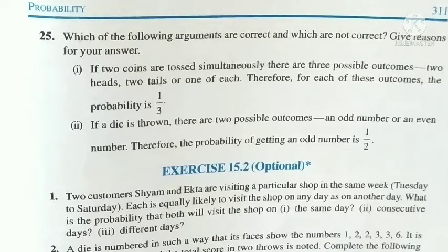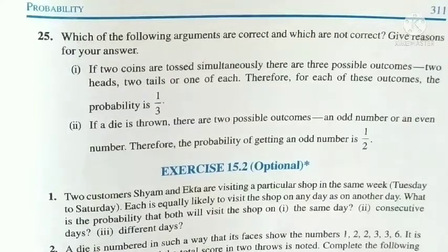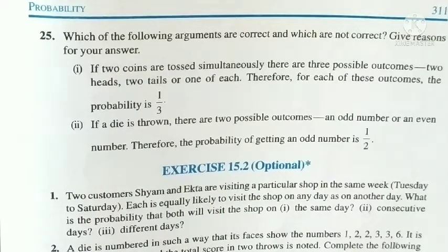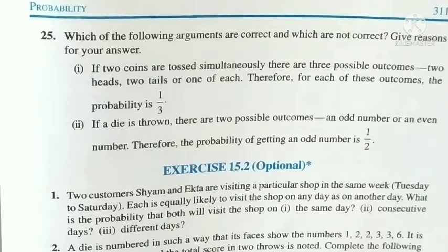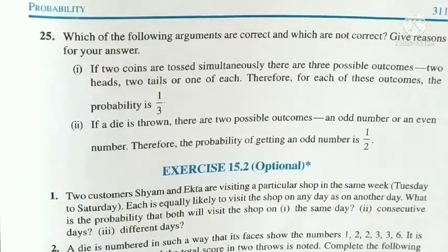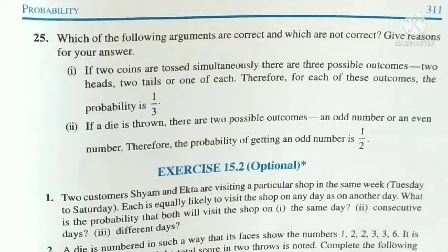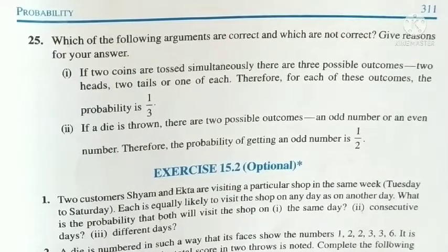Question 25, last question of the exercise: which of the following arguments are correct and which are not? Give reasons. First: if two coins are tossed simultaneously, there are three possible outcomes — two heads, two tails, or one of each — therefore probability of each is 1/3. Second: if a die is thrown, there are two possible outcomes — an odd number or an even number — therefore probability of getting an odd number is 1/2.